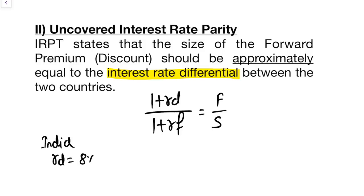Now let's say we are in India. So India's rate let's take as 8 percent, foreign country's rate let's take as 4 percent. Spot rate of rupees per dollar, let's take as 50. Forward rate, we don't know.